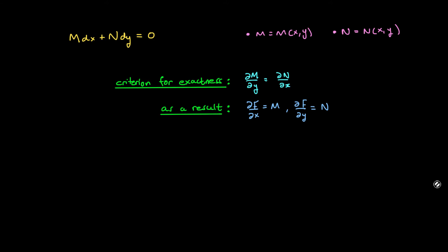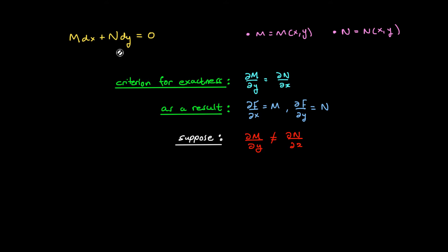However, suppose that ∂M/∂y was not equal to ∂N/∂x — that is, this differential equation is not exact. How are we then to determine an integrating factor to multiply this differential equation by in order to make it exact?